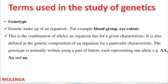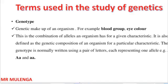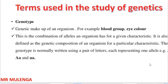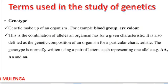Genotype refers to the genetic makeup or genetic composition of an organism. Examples include blood group or eye color. Genotype is the combination of alleles that an organism has for a given characteristic — alleles being alternative forms of a gene.